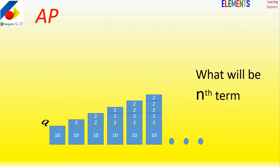For instance, the first term is a - for notation we use a. The next term is a plus d, where d is the common difference.